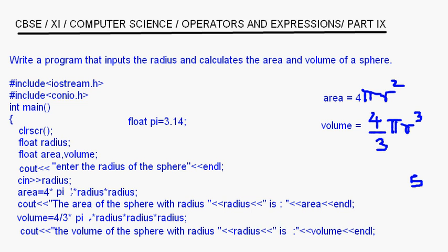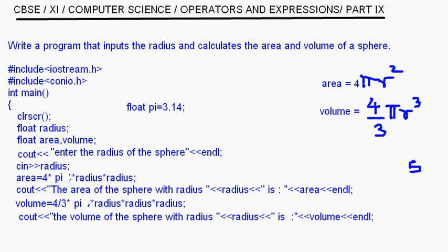That's all we have to do in this program. After this we close the main method. I will add a getch here if you are using Turbo C++. Then return 0 and close the bracket for main. This is a simple program in which we used the multiplication and division operators.